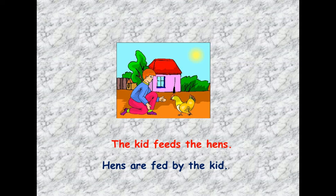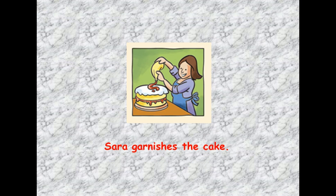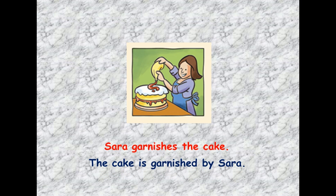As you can see, in the active we have subject + verb + object, and in the passive we have object + verb to be + past participle of the verb. For example: 'Sarah garnishes the cake' becomes 'The cake is garnished by Sarah.'